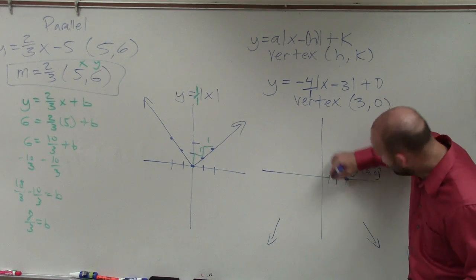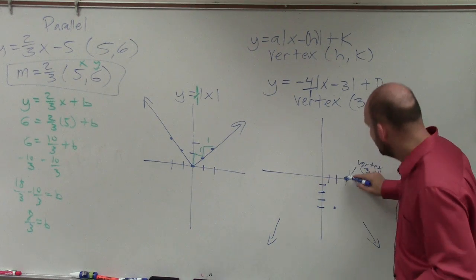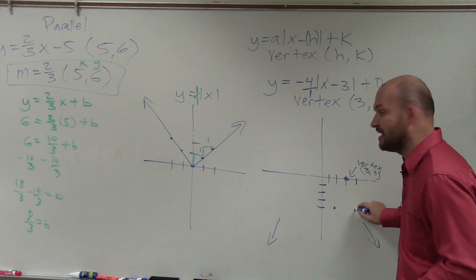So now I go down 4 over 1. 1, 2, 3, 4. So I go down 4 over 1 unit. Down 4 over the other unit, right? Because it makes a v.